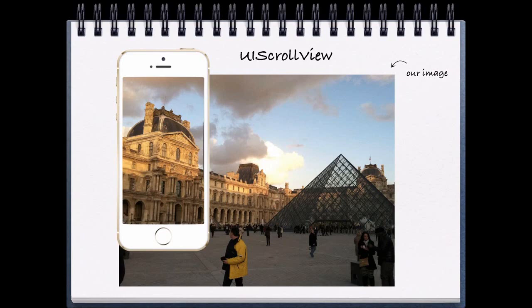There is also a really cool property on scroll view called content size, which is the total area that you're able to scroll over. Here we see that we've set our content size quite large so that we have a lot of space we can scroll over.